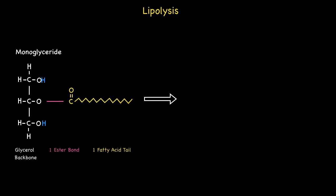Let's now look at the third and final step. This involves the hydrolysis of the middle ester bond. Once again this involves a water molecule depicted as HHO in blue. The blue hydrogen atom on the far left bonds to the oxygen on the glycerol backbone, while the remaining blue HO attaches to the carbon on the fatty acid residue on the right. Here is an illustration of the products of the third and final step.